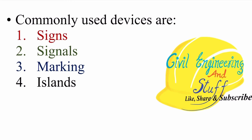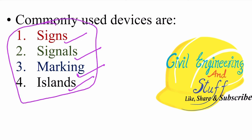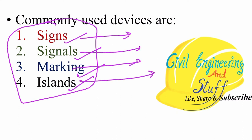The main traffic control devices installed on roads are: traffic signs, which convey certain messages; traffic signals; road markings; and traffic islands. These are the most commonly used traffic control measures to ensure safe and smooth movement of traffic in a road section. In the upcoming lecture, we are going to discuss each of these in detail.